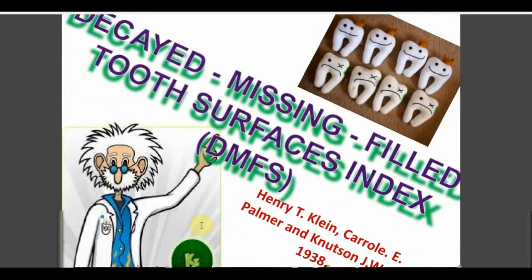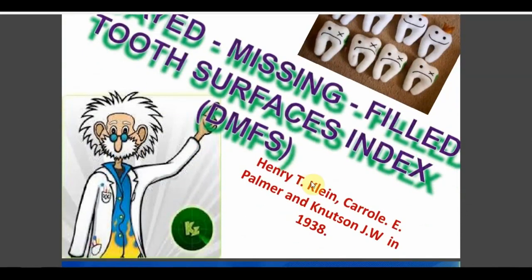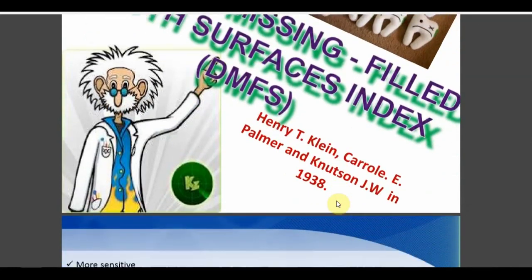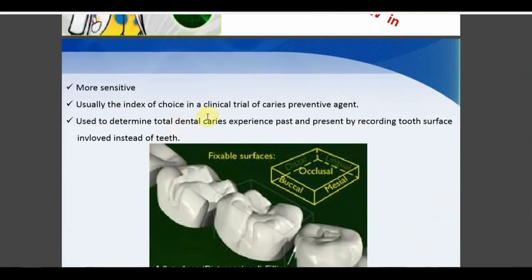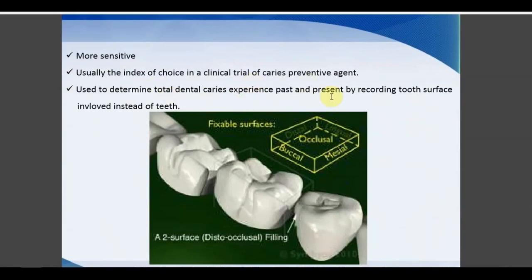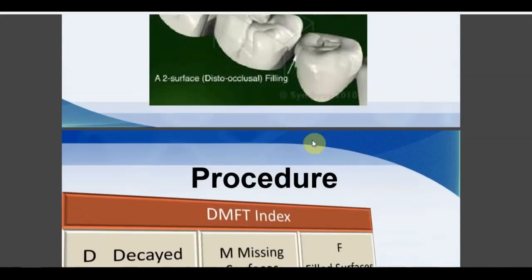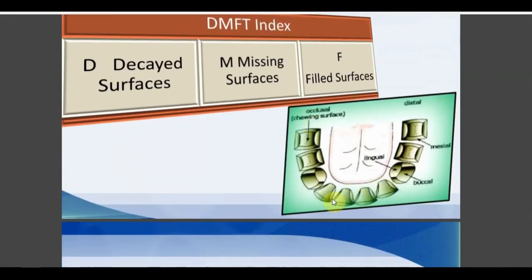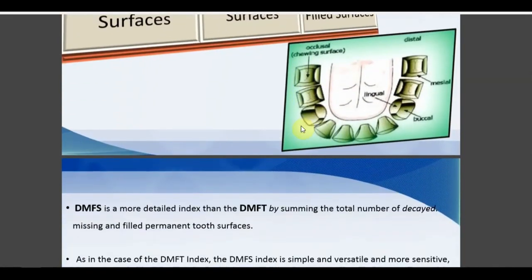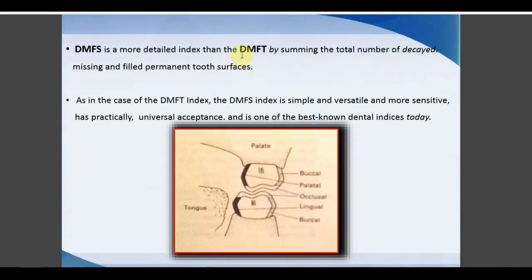DMFS (Decayed, Missing, Filled Surfaces) was also introduced by Klein, Palmer, and Knutson in 1938. It is more sensitive than DMFT because multiple categories can be recorded for a single tooth — a tooth can have both caries and a filling on different surfaces. It is the index of choice in clinical trials of caries prevention and measures total caries experience — past and present. Posterior teeth have five surfaces: buccal, lingual, mesial, distal, and occlusal; anterior teeth have four: buccal, lingual, mesial, and distal (no occlusal).